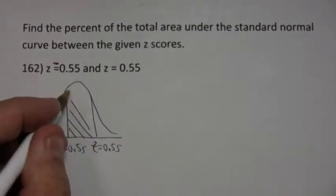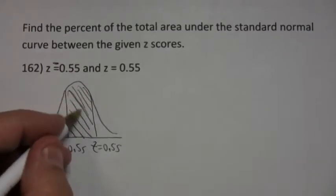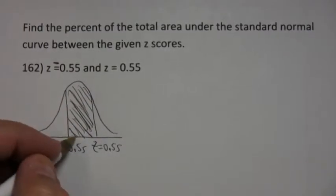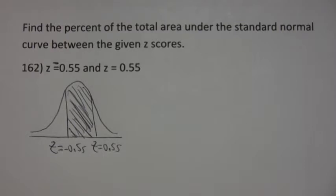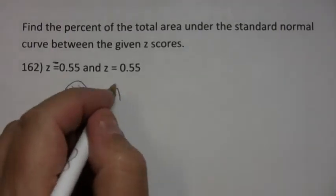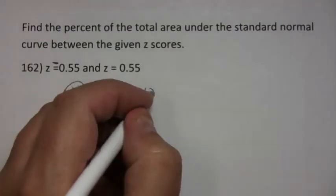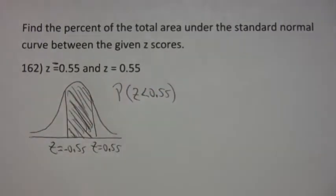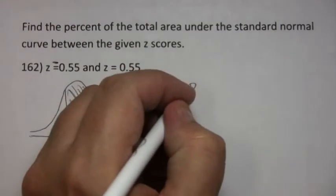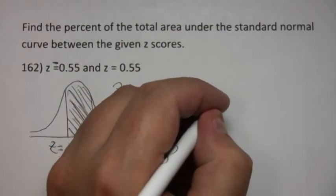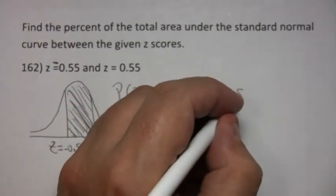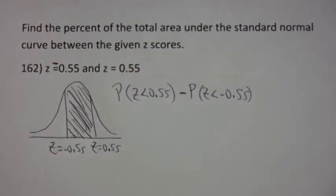And so, you end up looking for this area right here. So, the probability that z is less than the larger number, the probability that z is less than the smaller number, and subtract the two results.